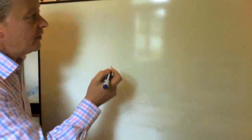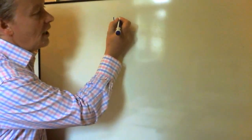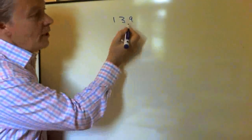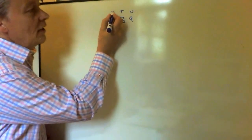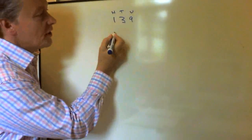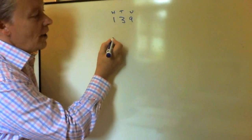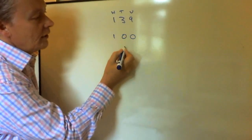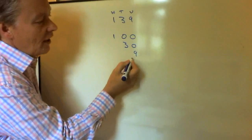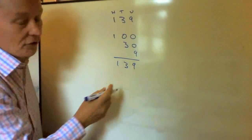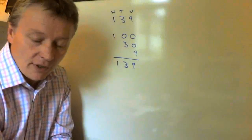Today we're going to start talking about how to add numbers together. One of the ways I want to look at first is what they call partitioning, or breaking the numbers down into their component parts. For instance, the number 139 means nine units, three tens, and one hundred — made up of 100, then 30, then 9. Add those together and you get 139. That's how we break up the numbers.